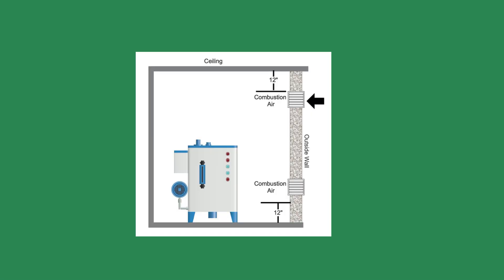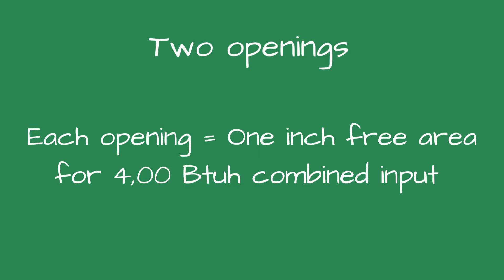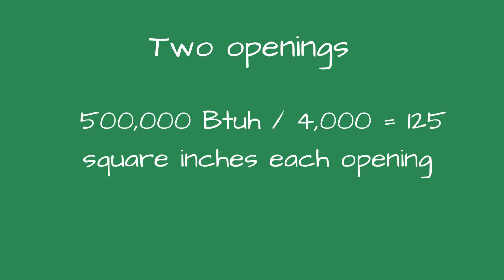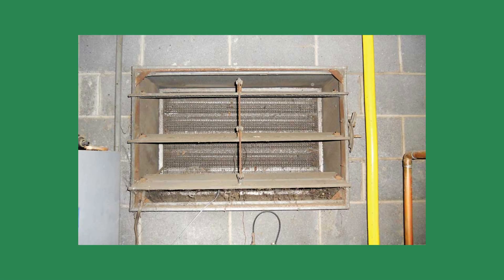The second option for combustion air openings allowed by the International Fuel Gas Code is two openings. One opening must be within a foot of the floor and one within a foot of the ceiling. The calculation for this is 1 inch of free area for 4000 BTUs. Using the above example, each opening will require 500,000 BTUs divided by 4000, which equals 125 inches of free area.